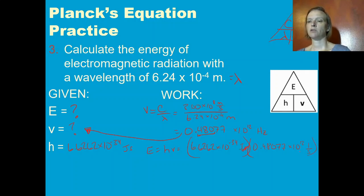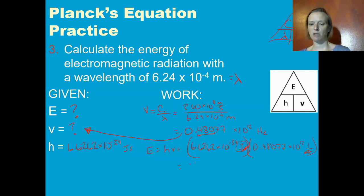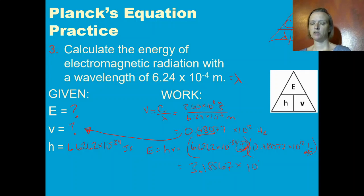My seconds are going to cancel out, leaving me with joules as my final answer. When I do the multiplication, 6.6262 times 0.48077 gives me 3.18567 times 10 to the negative 22 joules, since negative 34 plus 12 is negative 22.